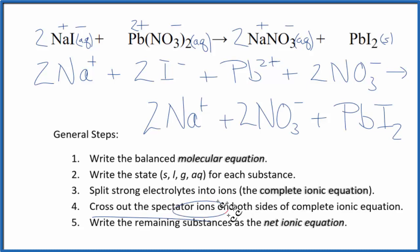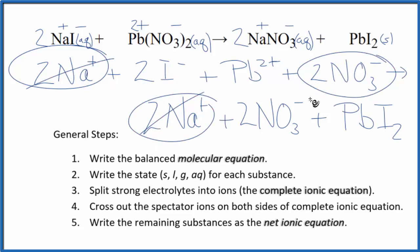So now we can cross out spectator ions on both sides of the complete ionic equation. In the reactants, we have 2 sodium ions and in the products. Cross those out. 2 nitrate ions again in the products. Cross them out. What's left, that is the net ionic equation for NaI plus Pb(NO3)2. I'll clean this up and write the states in. We'll have our net ionic equation.